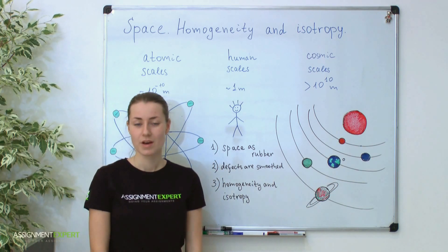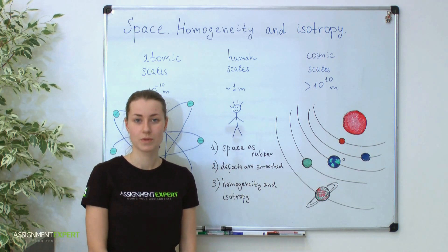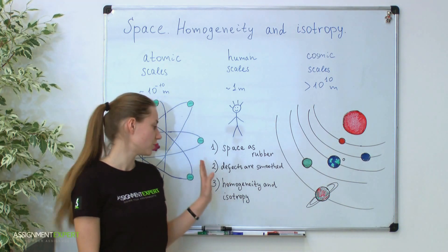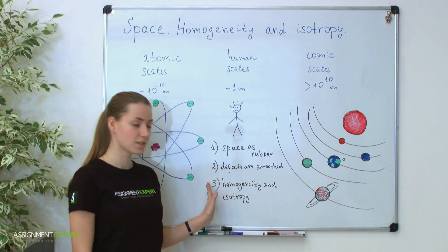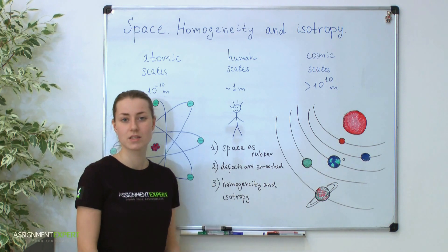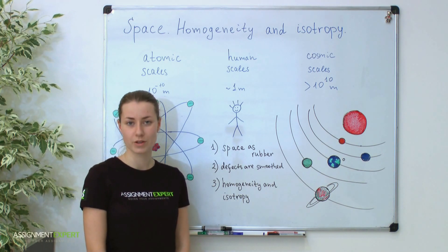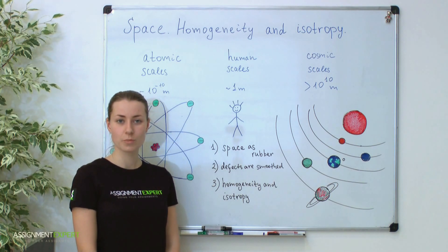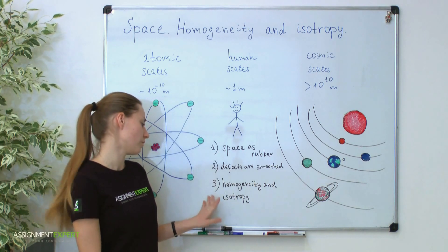The second. On the big scales, all the defects become smoothed, and we get homogeneous and isotropic space. And the last. Homogeneity means that the considered object has uniform structure, and isotropy confirms the uniformity in all its directions.